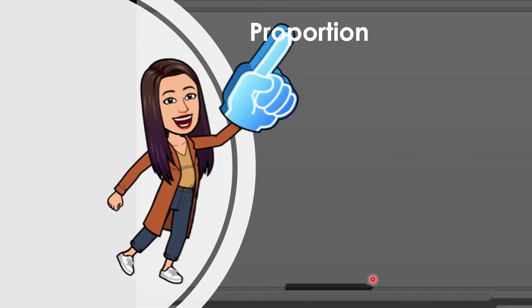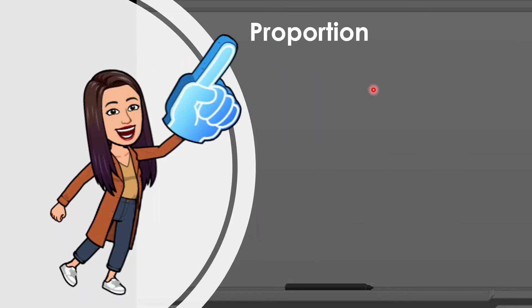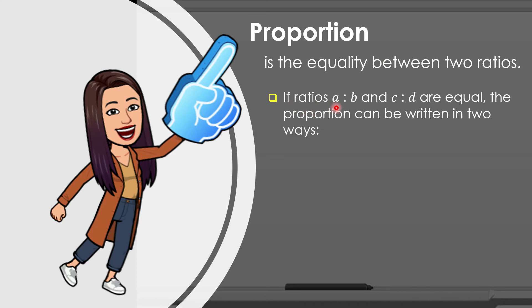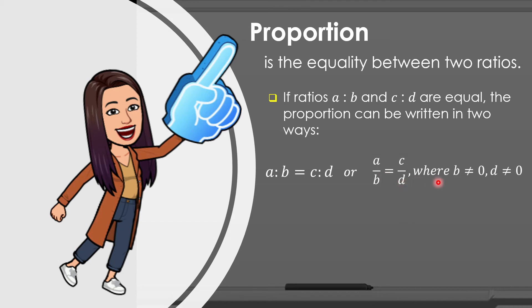Let us now move on with the definition of proportion. When we say proportion, it is the equality between two ratios. We need to have two equal ratios to say that those ratios are proportional. If ratios a is to b and c is to d are equal, the proportion can be written as a is to b is equal to c is to d, or a over b is equal to c over d, where b is not equal to 0 and d is not equal to 0. Take note that the denominator should not equal 0 to avoid undefined terms.